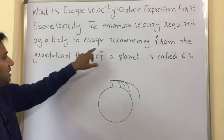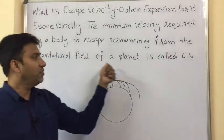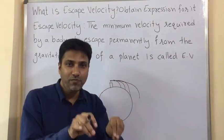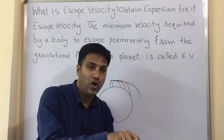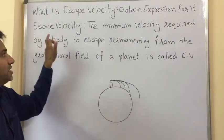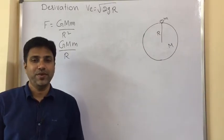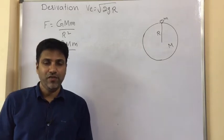So what is happening here? The object is escaping permanently from the gravitational field of a planet. That minimum velocity which is given to an object so that it should escape permanently, that velocity is called escape velocity. Let us derive the expression for escape velocity.